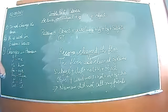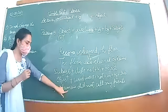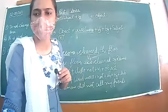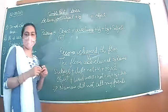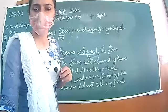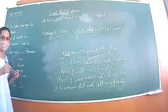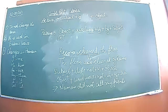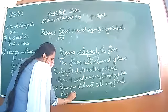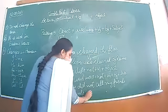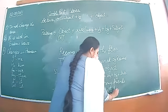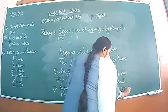Example: 'Naman did not call my friends.' Be careful — Naman is singular but the object 'my friends' is plural, so choose the verb accordingly. The passive form is: 'My friends were not called by Naman.'